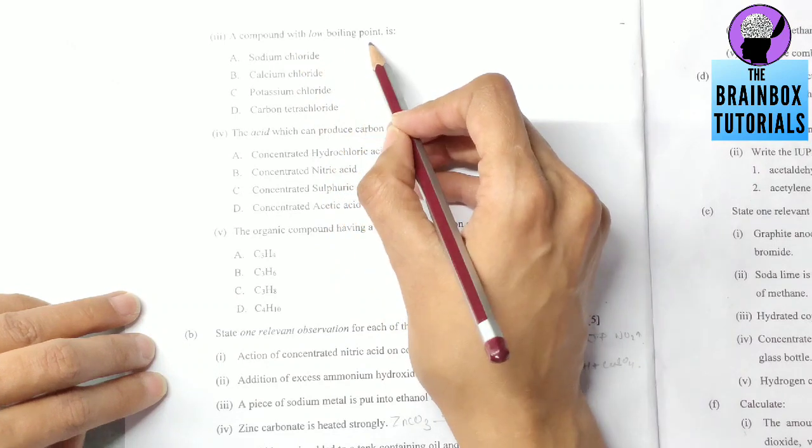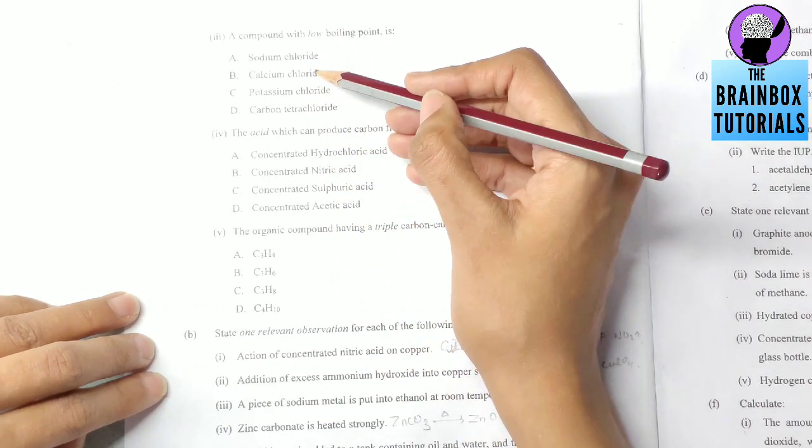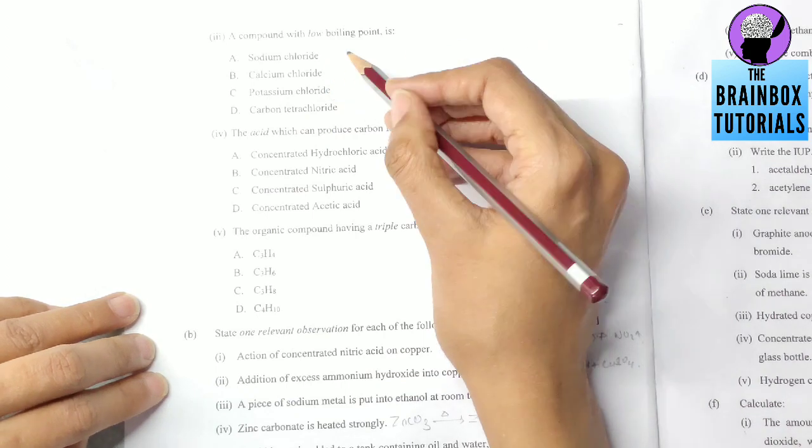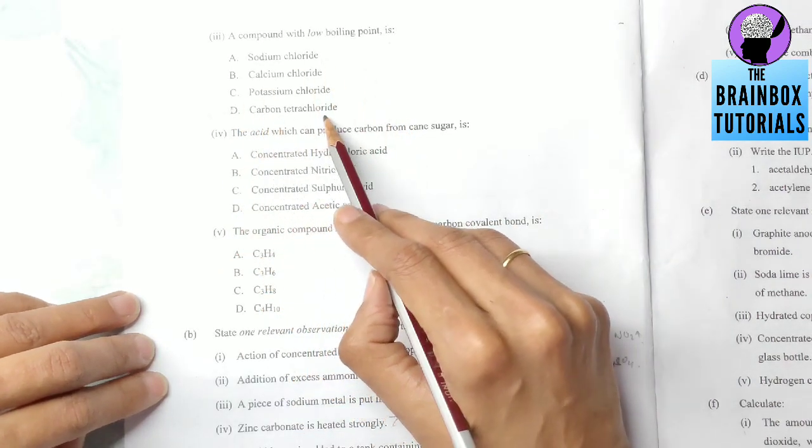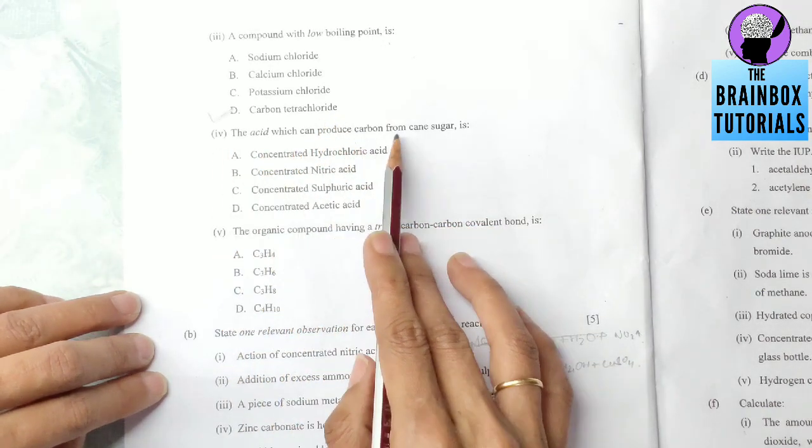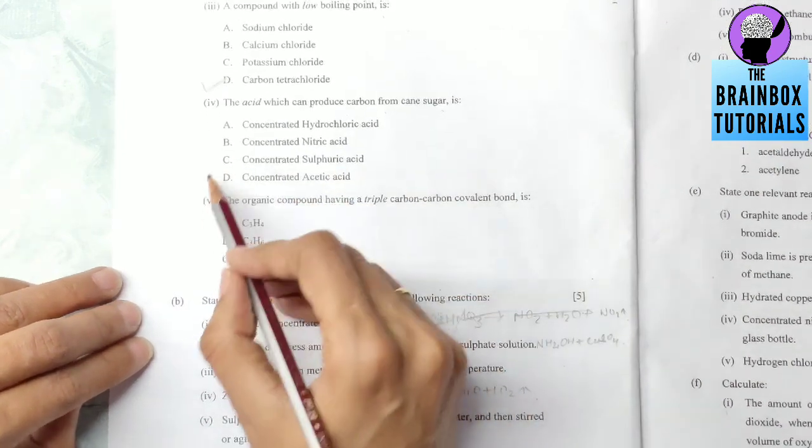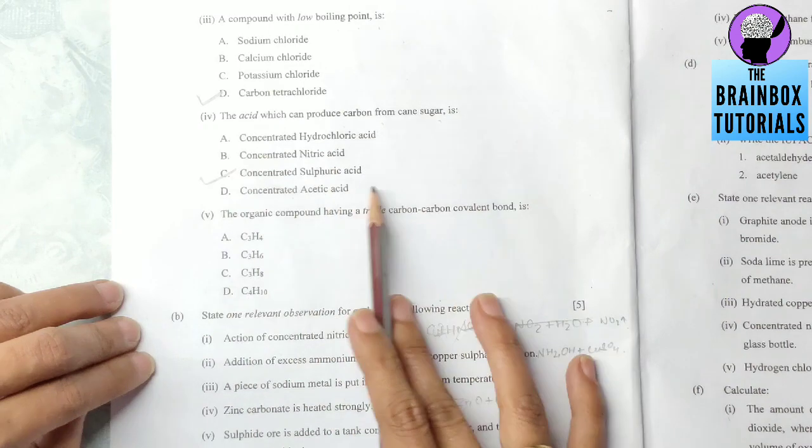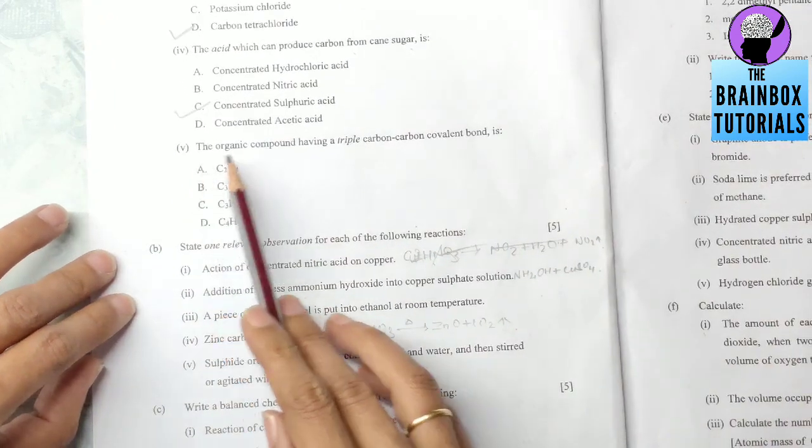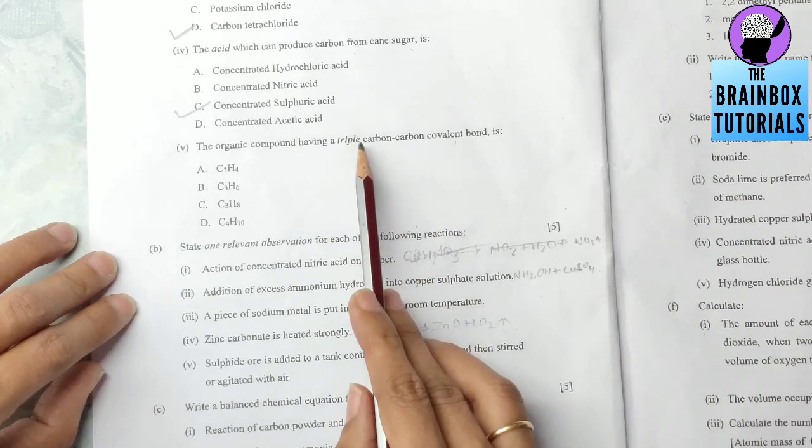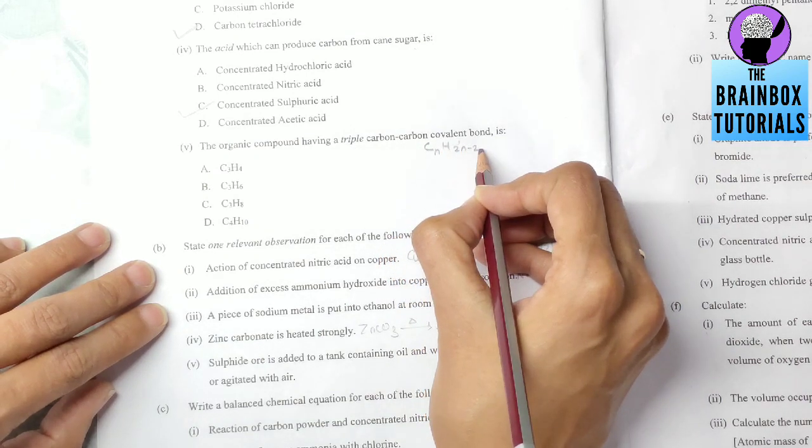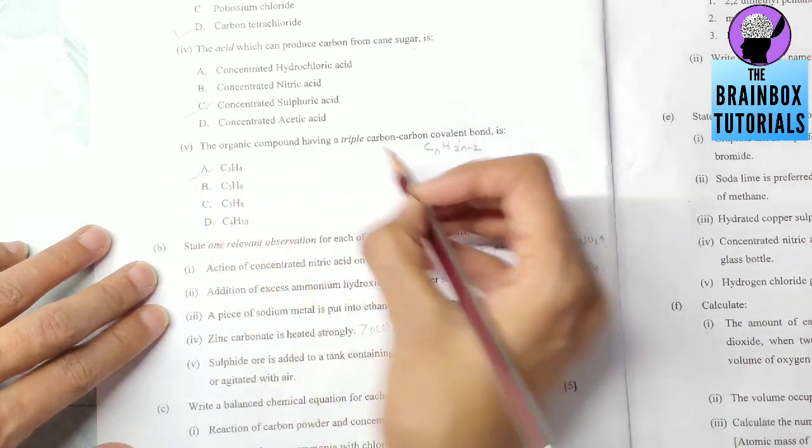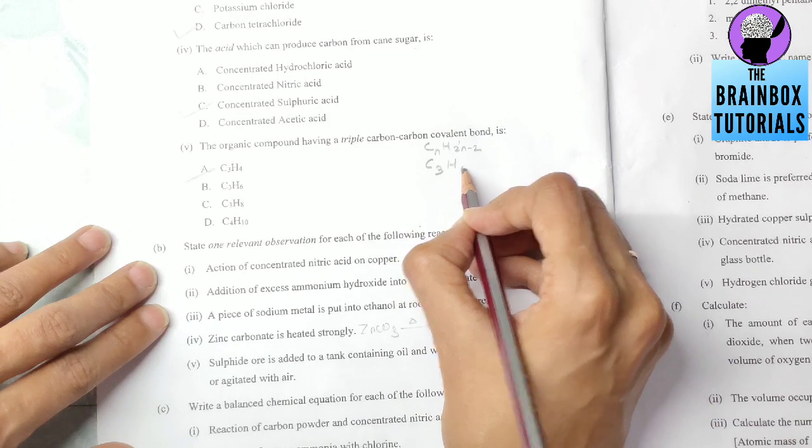Number three: a compound with low boiling point. The first three - sodium, calcium and potassium chloride - are electrovalent compounds. Low boiling point is only with covalent compounds, so number D, carbon tetrachloride, is the correct answer. Number four: the acid which can produce carbon from cane sugar. This will be concentrated sulfuric acid because it acts as a dehydrating agent. Number five: the organic compound having a triple carbon-carbon covalent bond is an alkyne. The general formula of alkyne is CnH2n-2, so the correct answer will be C3H4. Let's see C3, so H will be 2 into 3, 6 minus 2, 4, so number A is correct.